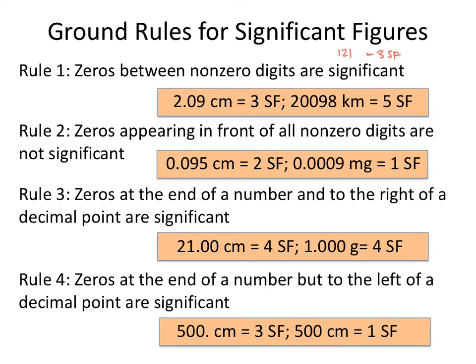Rule number four: zeros at the end of a number but to the left of the decimal point are significant. Notice I have 500 written here with a decimal and 500 without a decimal. With the presence of the decimal, the zeros at the end of the number are marked as significant — the five and the two zeros are each significant digits, so there are three sig figs. If the value is written with no decimal point, it's only that first non-zero digit that's going to be significant.